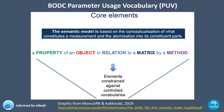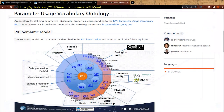Recently we've been moving towards using the Parameter Usage Vocabulary (PUV) from the British Oceanographic Data Centre. This vocabulary has a semantic model of 'property of an object in relation to a matrix by a method,' with some variations, but that's the core model. Each of those elements comes from vocabularies, and then that whole thing on its own also forms a vocabulary term. Everything with the S01, S02, S03 through S26 prefixes are all separate vocabularies being linked together with this conceptual model to derive singular terms for describing everything.